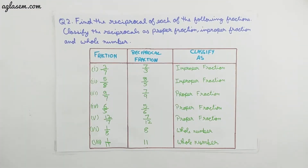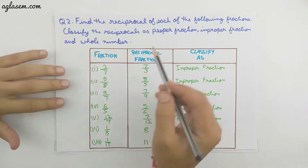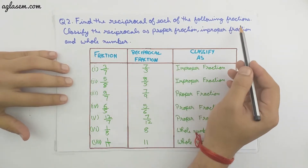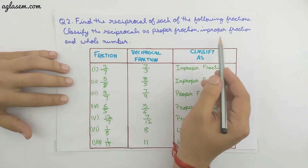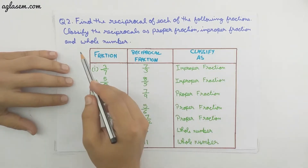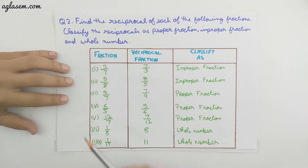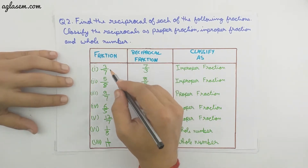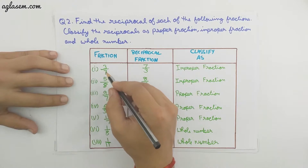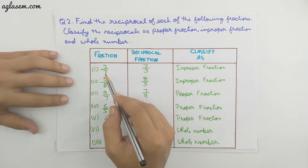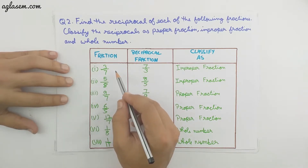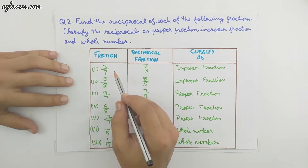Moving to the second question of the exercise: find the reciprocal of each of the following fractions and classify the reciprocal as a proper fraction, improper fraction, or a whole number. To find the reciprocal, we swap the numerator and denominator — the bottom comes up and the top goes down.